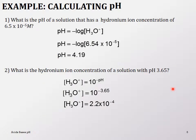Let's calculate some pH values. What is the pH of a solution with a hydronium ion concentration of 6.5×10⁻⁵? Just by looking at the power — 10⁻⁵ — the pH should be around 5, so somewhere in the range of 4 to 6. The answer is 4.19; all you do is take the negative log of the hydronium ion concentration.